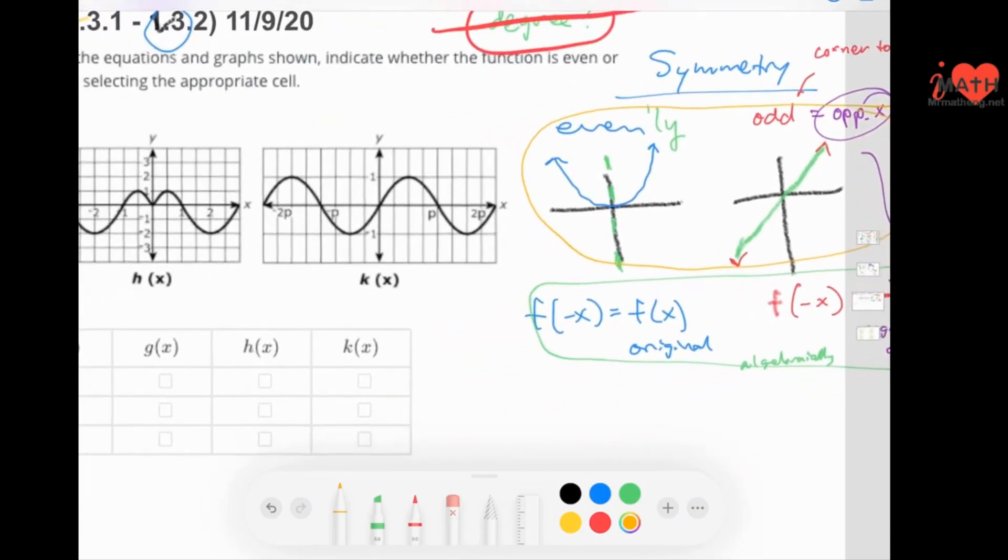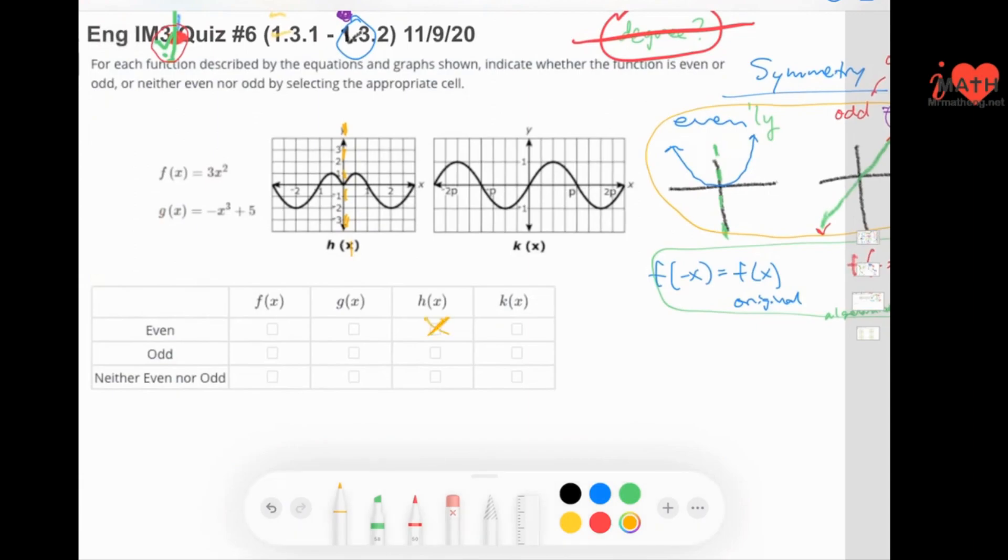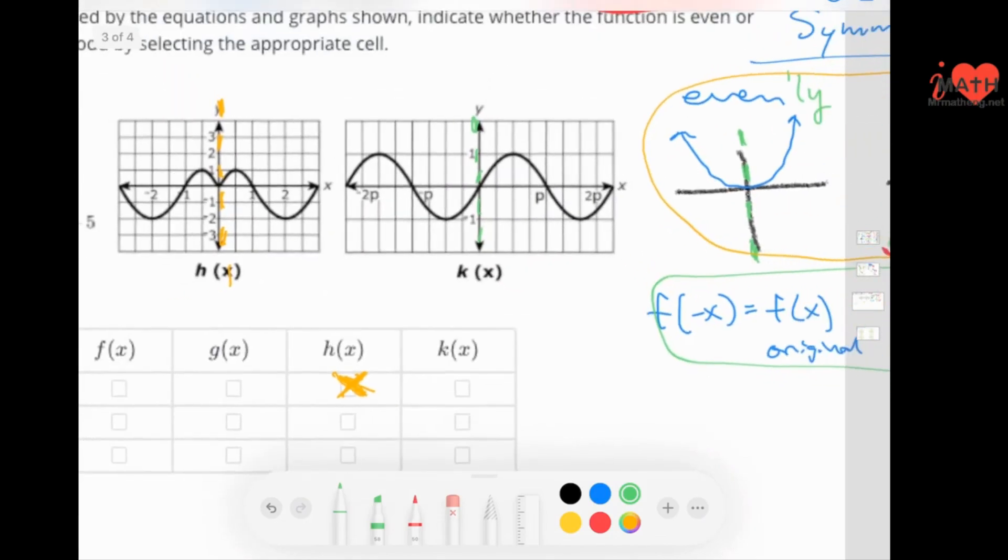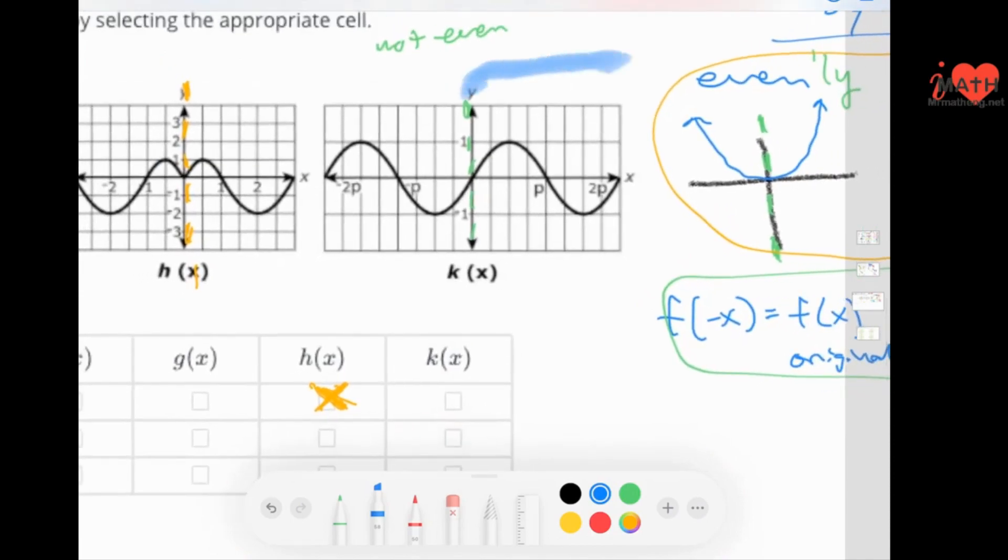So in this problem, you have two that are graphical. For h of x, can I fold that in half in the y-axis? And you can't. So that is not even. Can I fold this one down this way? And the answer would be no. It's not even. So let's write that, not even, because you can't fold it on the y-axis. The next thing is, can you do it corner to corner? So let me highlight the corners here in blue and yellow.